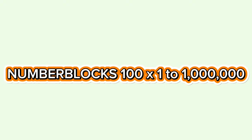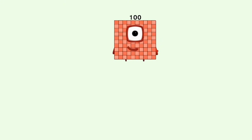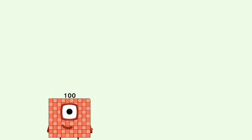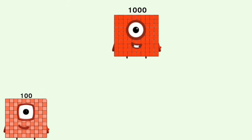Number blocks: 100 times 1 to 1,000,000. 100 times 1 equals 100. 100 times 10 equals 1,000.